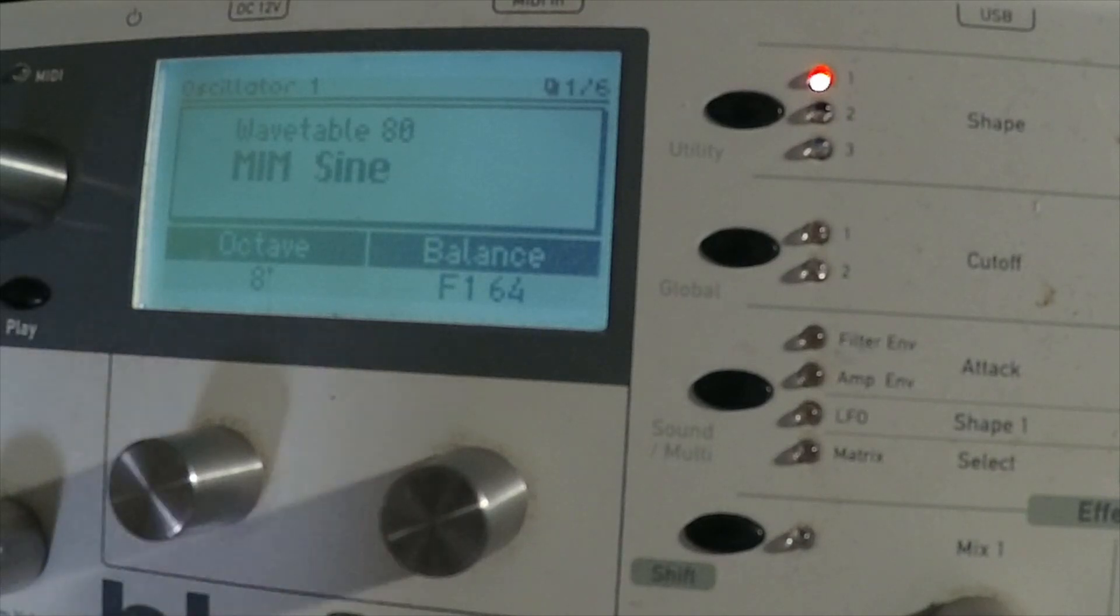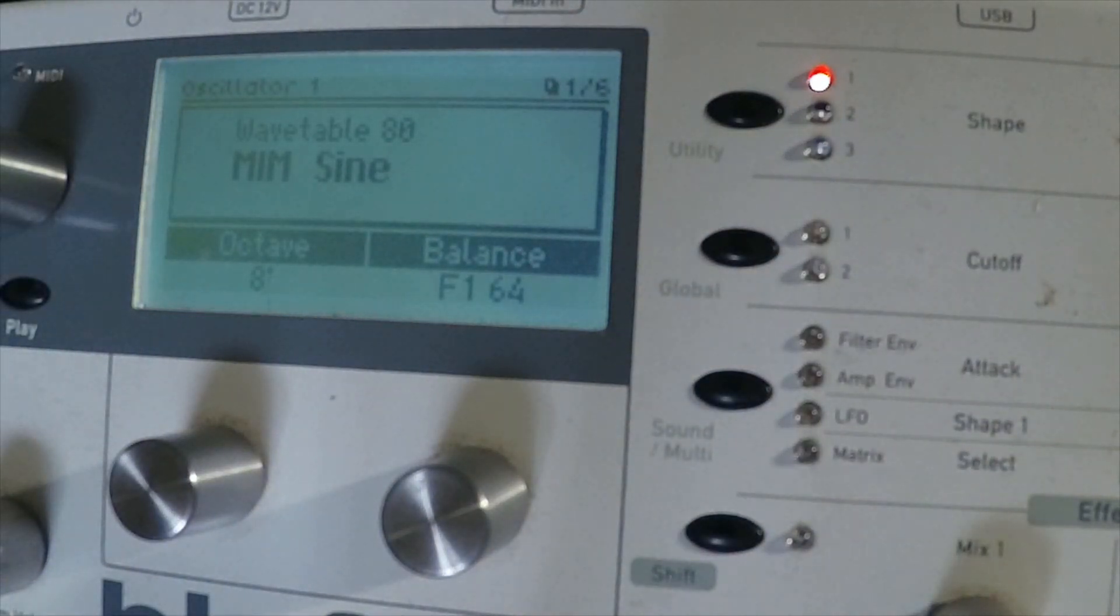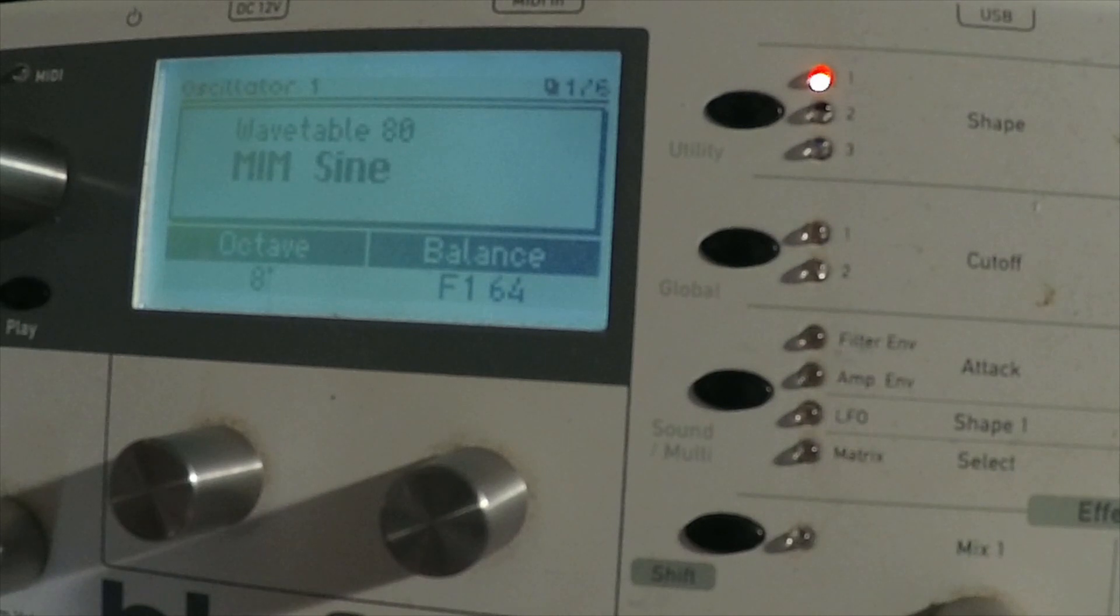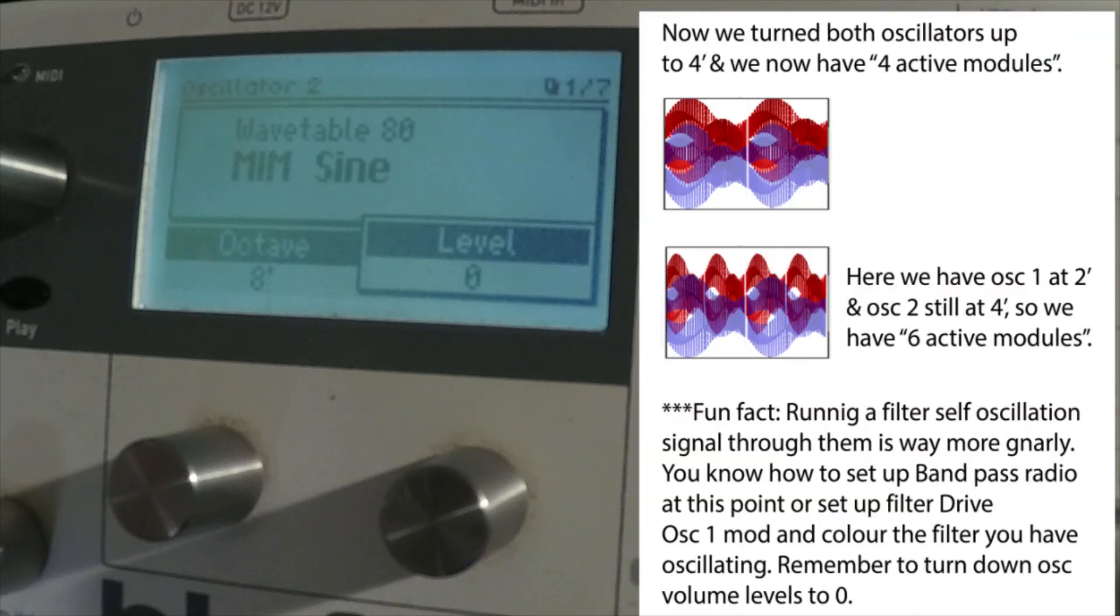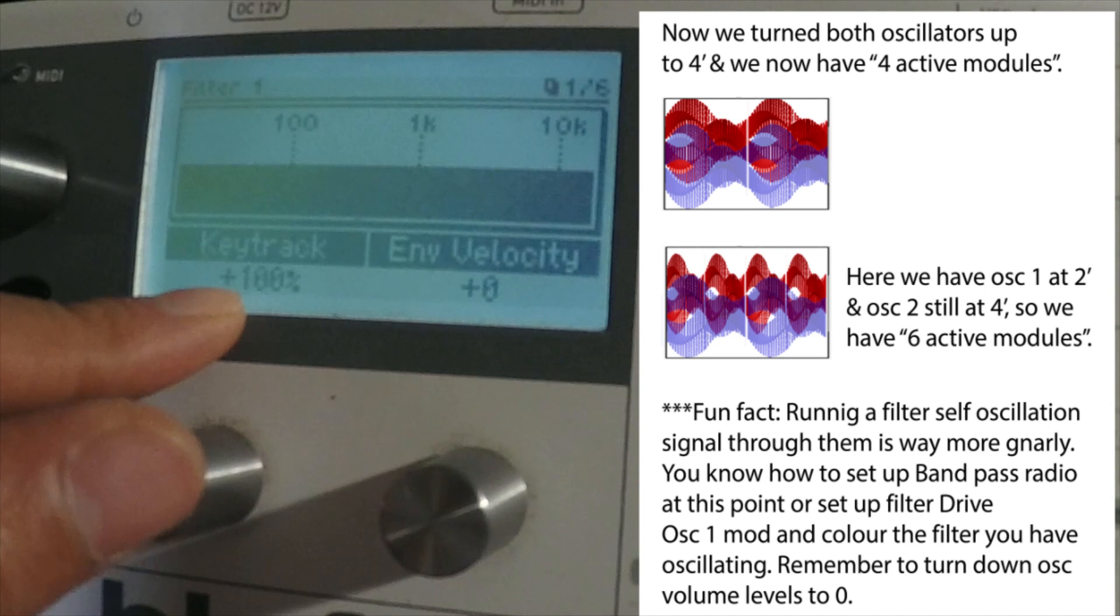What you gotta do is understand that this module is like something you can run a signal through. So when you kill the volume to both of these, you go set up a filter, key tracking 100, so you can key tune it.